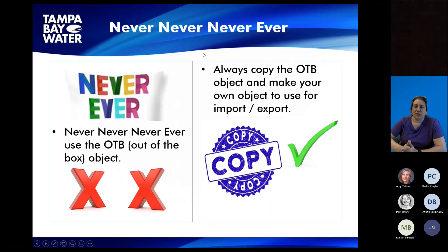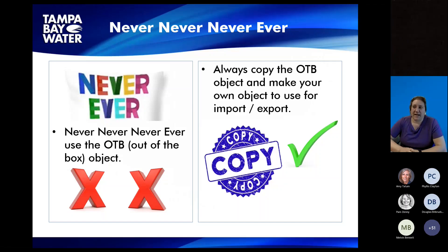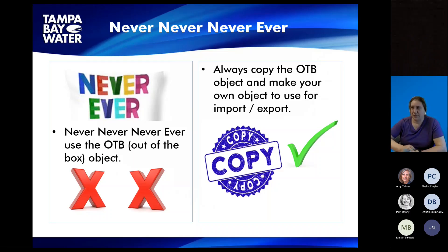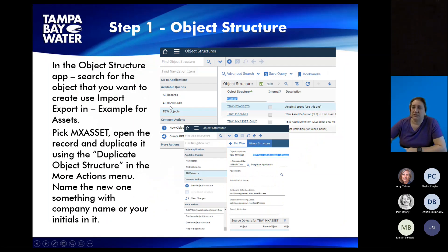Before I go further, I want to say: if you're doing this with the object structure, never, never, never, never ever use the out-of-the-box object, because you don't want to go in there and change any parameters and mess up anything with what Maximo does. Always take that object, copy it, make your own, and then use that copied object for the import/export.